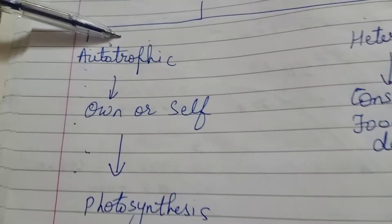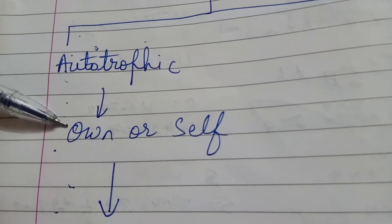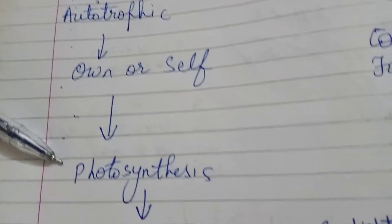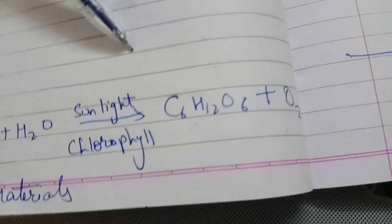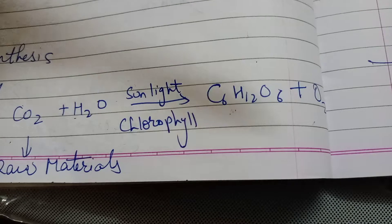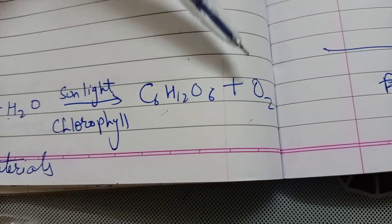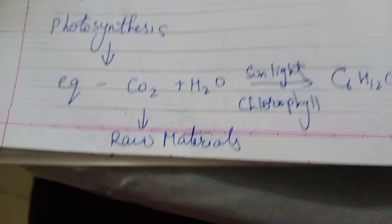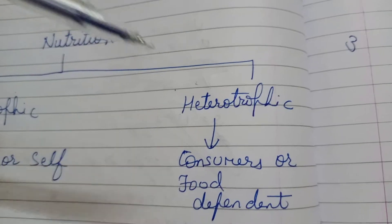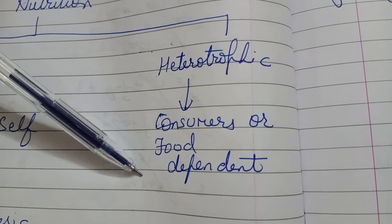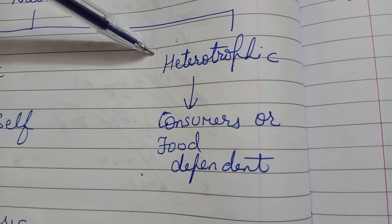Nutrition is of two types: autotrophic mode of nutrition and heterotrophic mode of nutrition. Auto means self. Plants are the only living organisms on this earth which prepare their own food by the process of photosynthesis. Carbon dioxide and water, in the presence of sunlight and chlorophyll, prepare their own food — carbohydrates — and the waste product is oxygen. Heterotrophic mode of nutrition means living organisms which depend on other living organisms for their food, as we also take heterotrophic mode of nutrition.